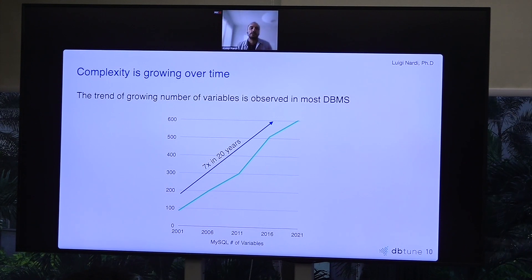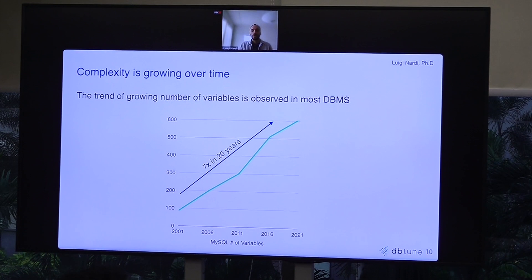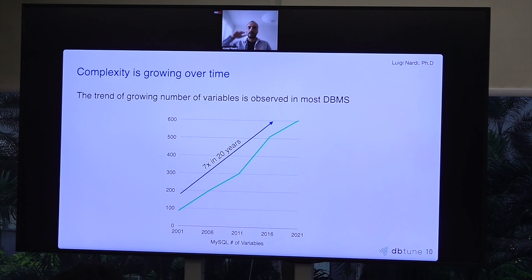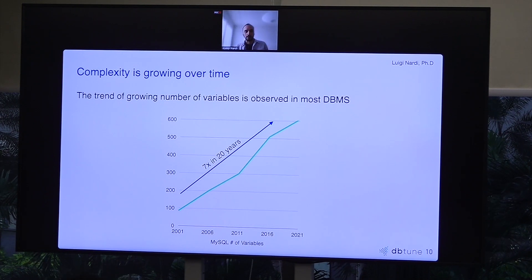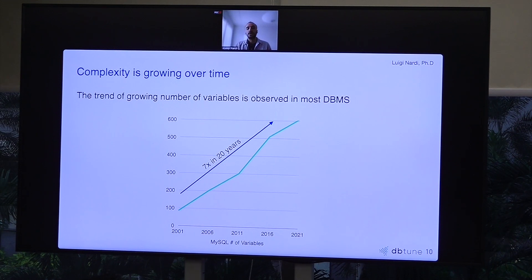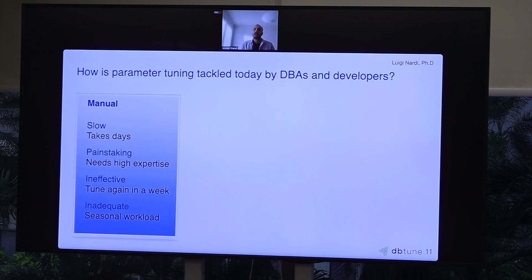Looking at the complexity of the parameter tuning problem: using MySQL as an example, the number of parameters has been linearly increasing over the years — about 600 parameters in MySQL and about 300 in PostgreSQL today. A linear increase in the number of parameters means an exponential increase in complexity. For those with a computational science background, this is an NP-hard problem — very challenging.